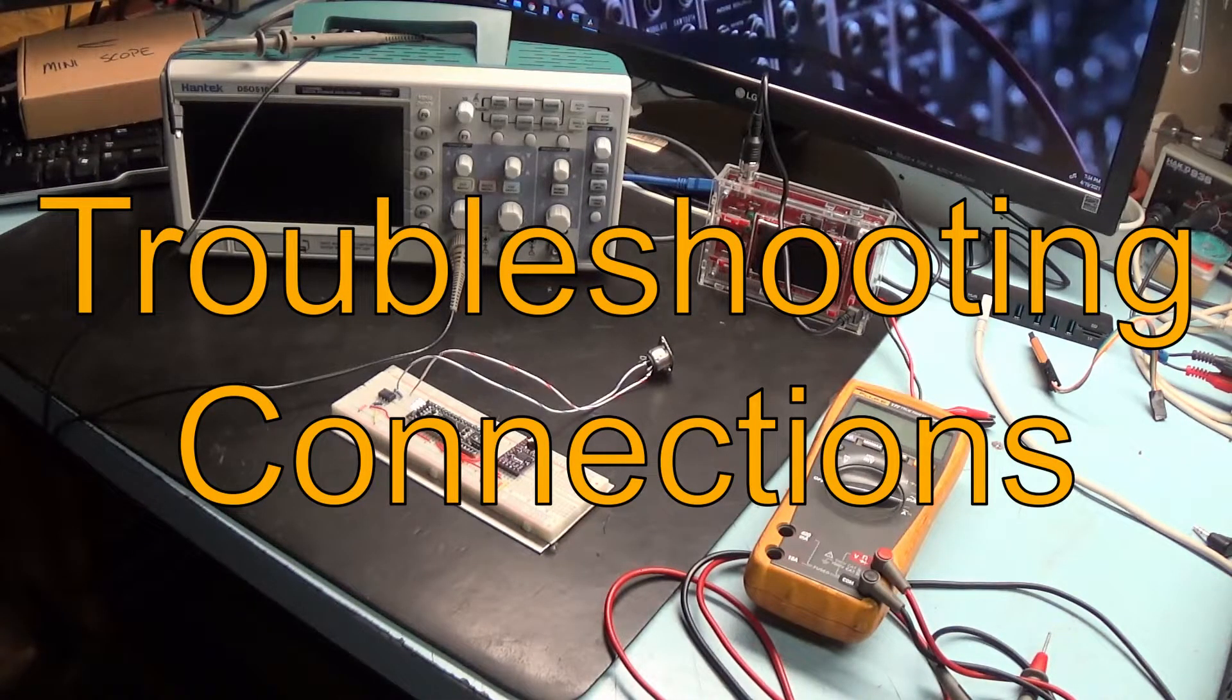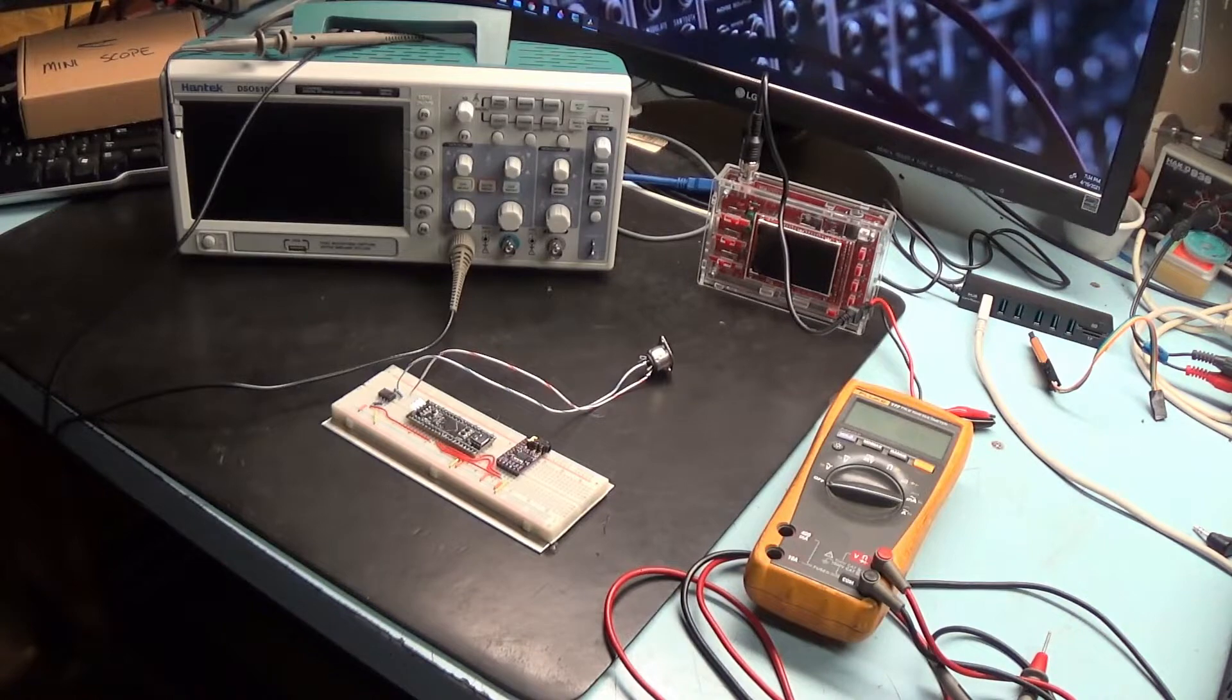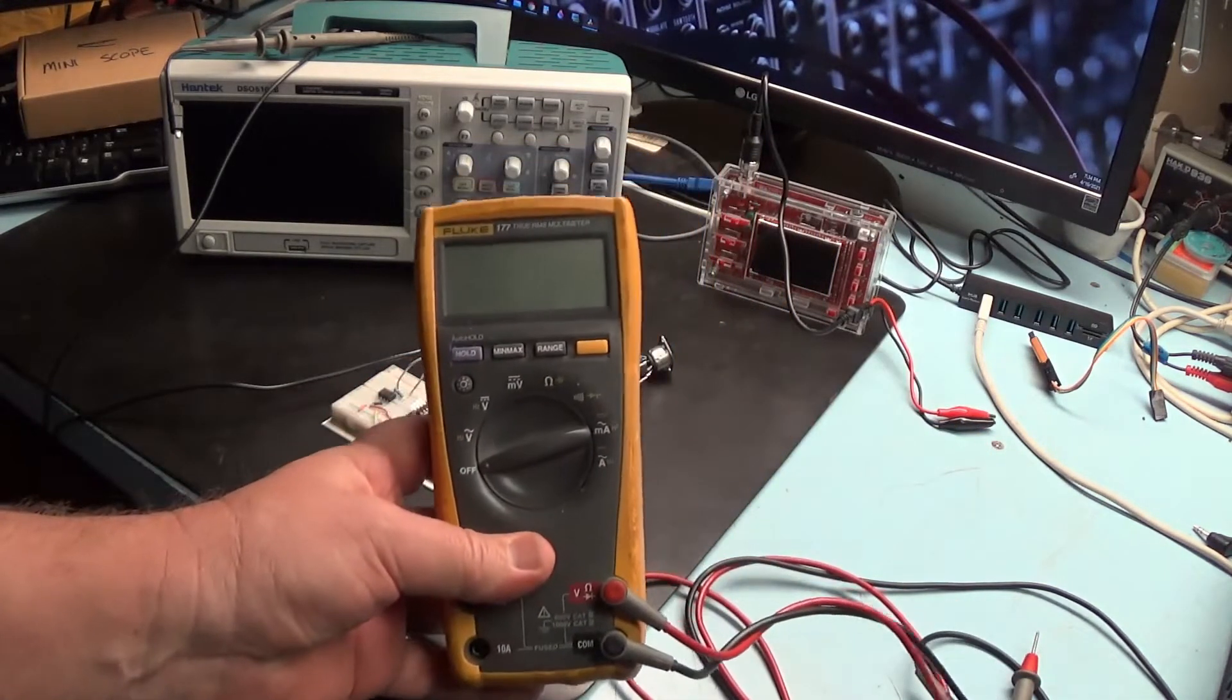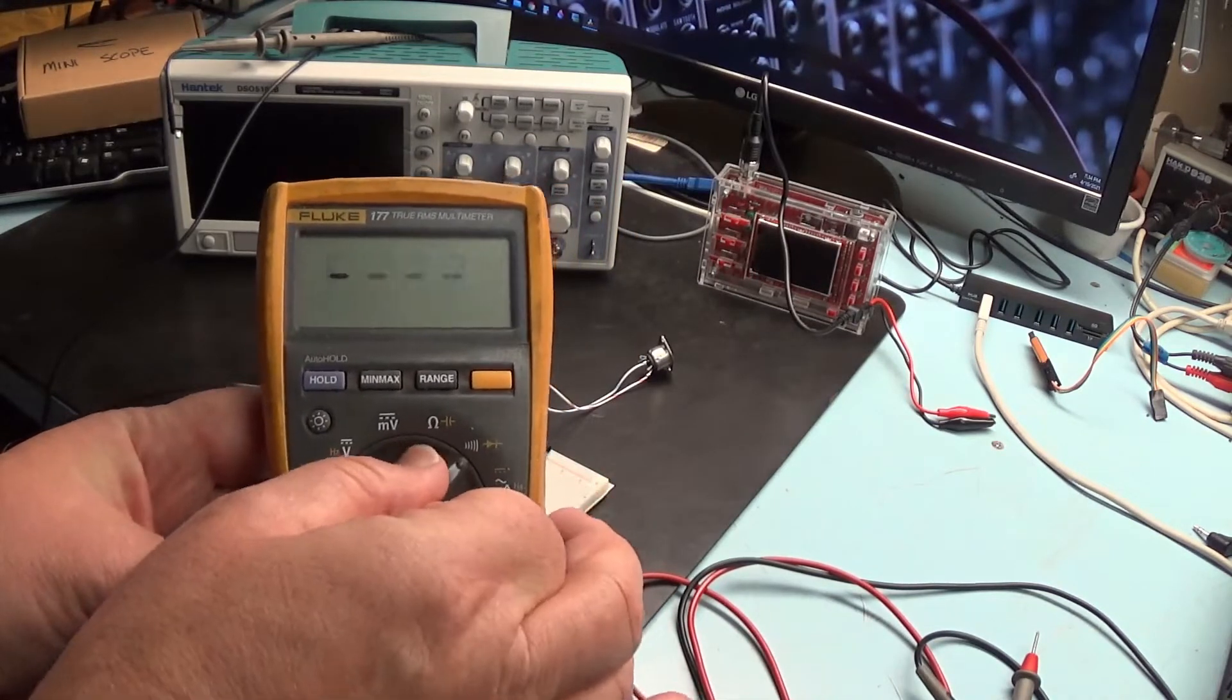In this video we're going to talk about troubleshooting any connection problems we may have when building the BP synthesizer. One of the simplest tools to use to diagnose problems is the voltmeter. Most voltmeters will have a simple continuity tester.